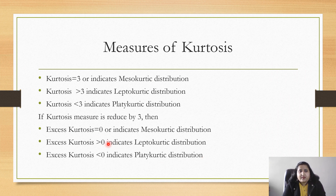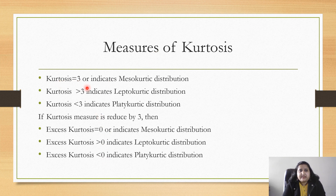We can measure kurtosis by the coefficient of kurtosis or by excess kurtosis. Excess kurtosis is simply kurtosis minus three. If using excess kurtosis, we compare with zero; if using the coefficient of kurtosis, we compare with three. Kurtosis equal to three indicates mesokurtic or normal distribution; greater than three indicates leptokurtic distribution; less than three indicates platykurtic distribution.